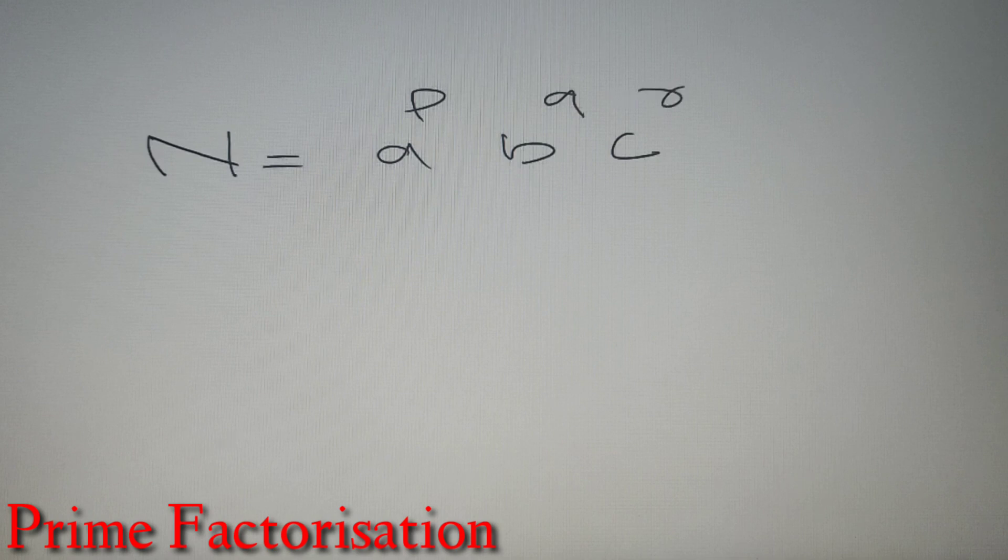Now by this statement what I mean is if you have a number let's say n then n can be represented as a product of its prime factors a, b and c which are raised to arbitrary powers p, q and r. Now they are products so you can multiply it. Now a, b and c are prime numbers and p, q and r are arbitrary powers.